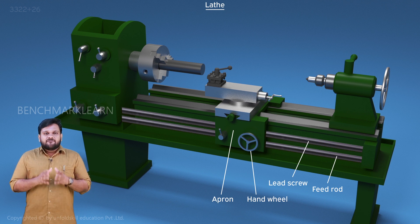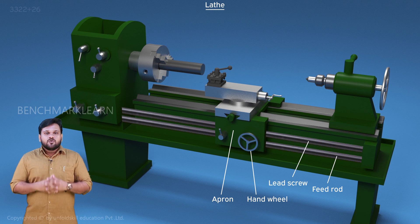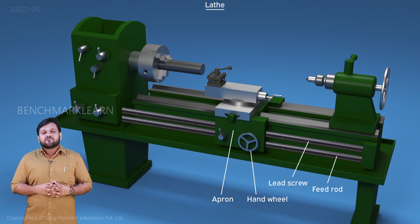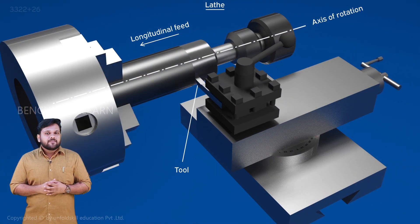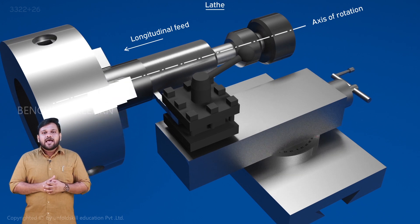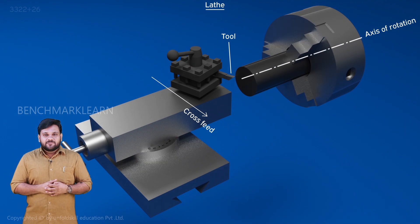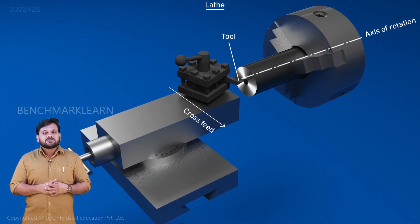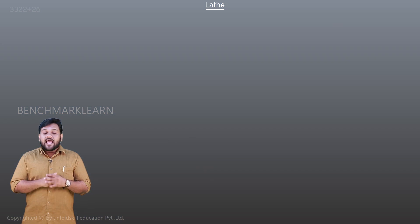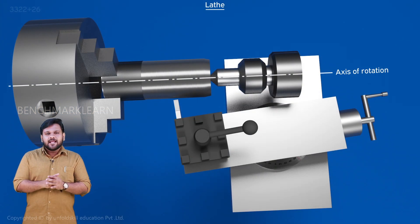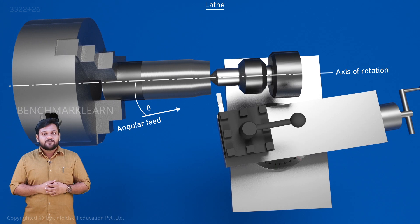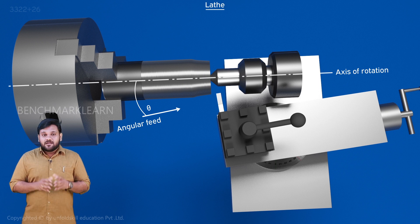Feed movement is the movement of the tool with respect to the workpiece. A lathe tool can be given three kinds of feed: longitudinal feed, where the tool moves parallel to the axis of rotation; cross feed, where the tool moves perpendicular to the axis of rotation; and angular feed, where the tool moves at an angle to the axis of rotation. All these speeds and depth of cut are related to the type of work material — the depth of cut is small for hard material.